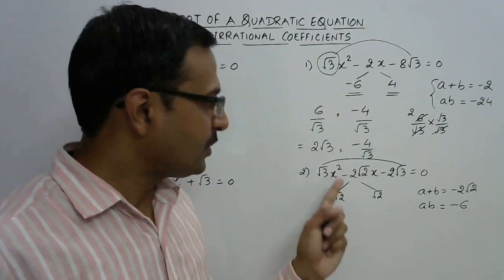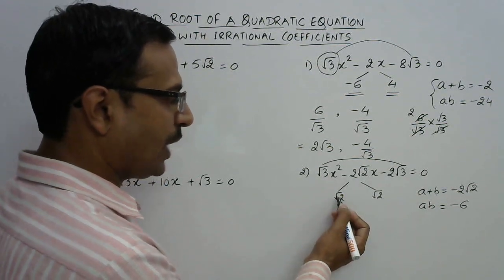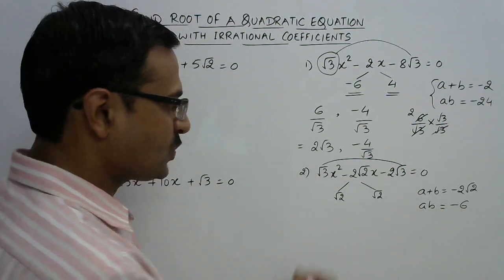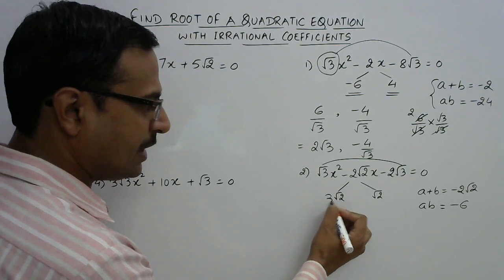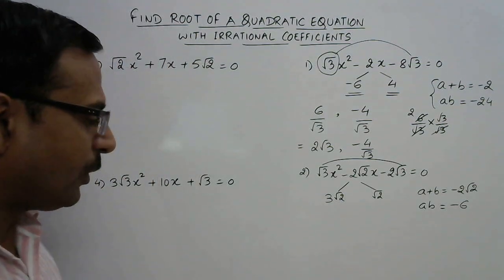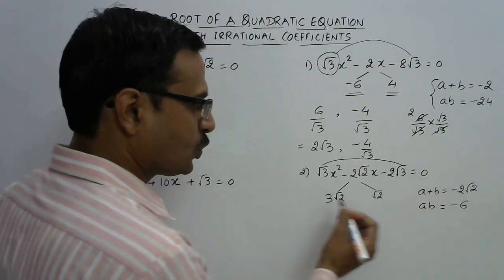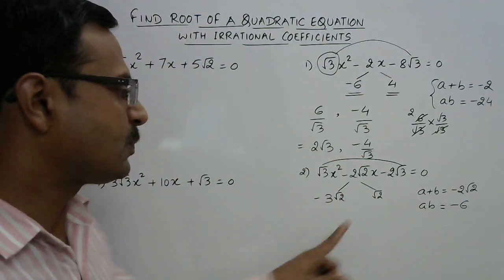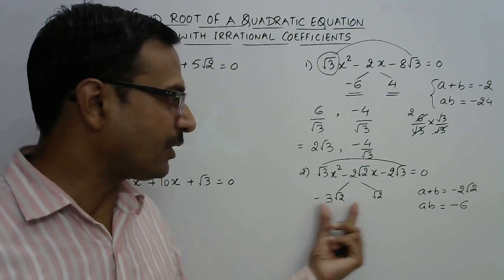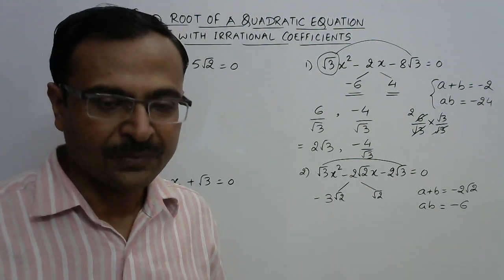Since √2 × √2 = 2, I need a factor of 3 because 3 × 2 = 6. So one factor becomes 3√2 and the other becomes √2. I need to be careful about sign: to get the sum as minus 2√2, the larger one is negative and the smaller positive. So minus 3√2 plus √2 gives minus 2√2, and their product gives minus 6. Step one is done — I have split the middle term.